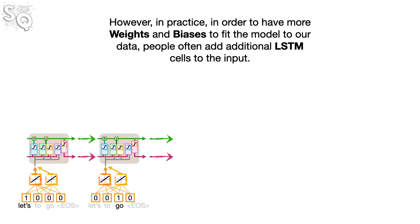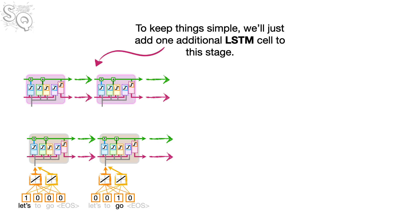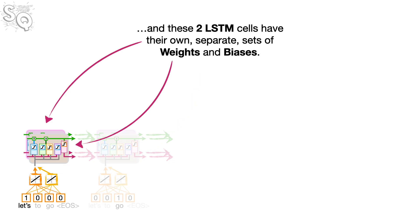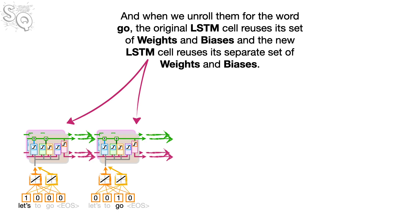However, in practice, in order to have more weights and biases to fit the model to our data, people often add additional LSTM cells to the input. To keep things simple, we'll just add one additional LSTM cell. This means the two embedding values for the word 'lets' are used as input values for two different LSTM cells. These two LSTM cells have their own separate sets of weights and biases. And when we unroll them for the word 'go,' each LSTM cell reuses its own set of weights and biases.